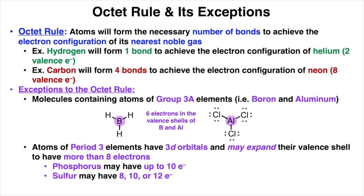Common period 3 atoms that you may encounter in this course are phosphorus and sulfur. Phosphorus may have up to 10 electrons, while sulfur may have 8, 10, or 12 valence electrons. And shown at the bottom right corner are a few examples of sulfur-containing compounds with varying numbers of valence electrons that you may encounter throughout the course.